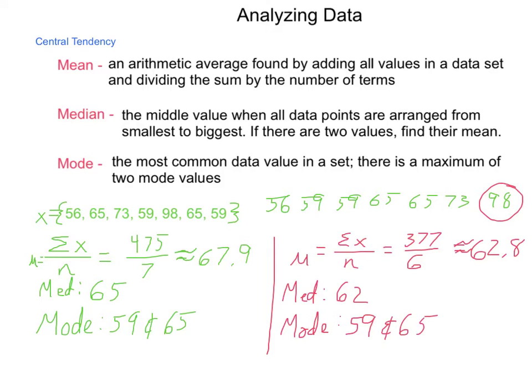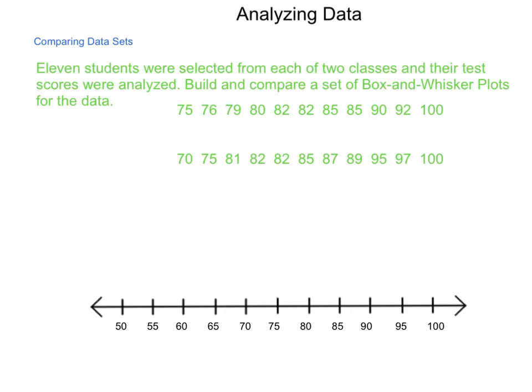So once we have the idea of what the central tendency is, mean, median, and mode, we can use this to help compare data from different sources. So comparing data sets. 11 students' tests were selected from two different classes, and their scores were analyzed. What we're going to do is build a box and whisker plot for the data. Now, a box and whisker plot, again, should be a review item, but let's take a look at it just as part of a review.